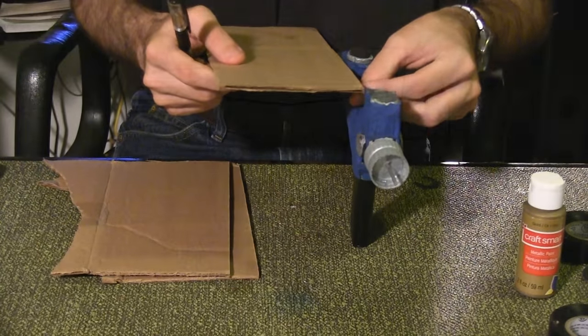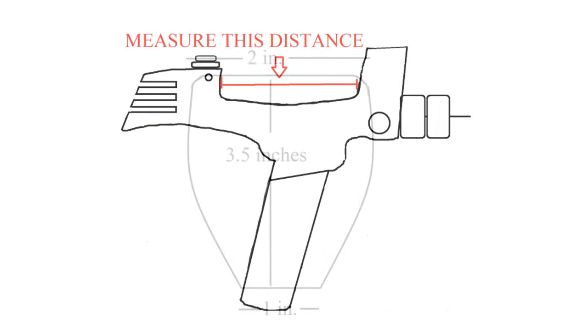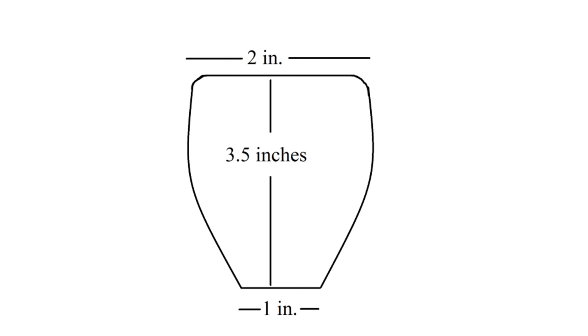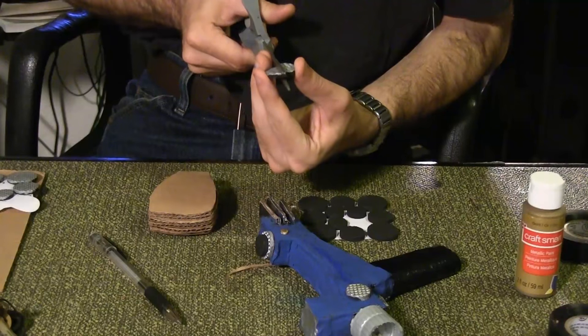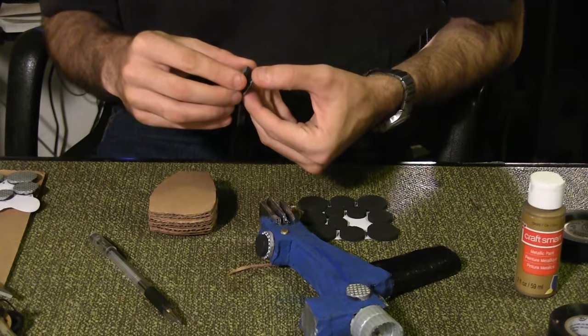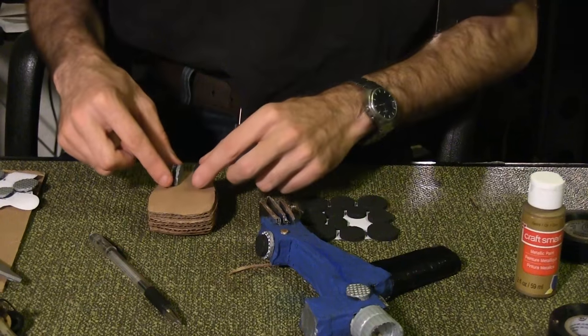Measure the length of this space of the phaser, then draw and cut out this design six times. Make sure the pieces fit in the allotted space. Cut a large silver furniture pad in half, and stick the halves together. Repeat this for a second pad.